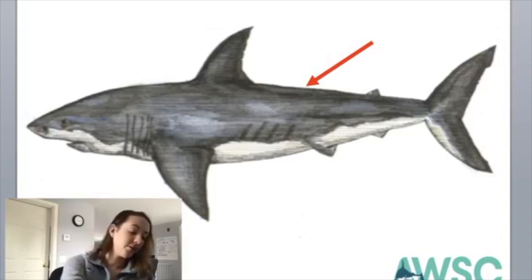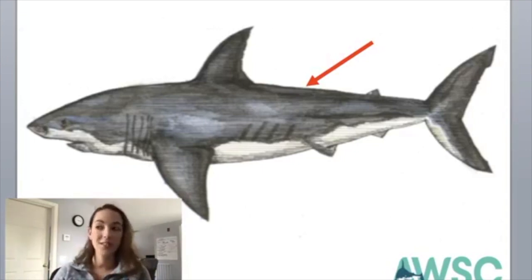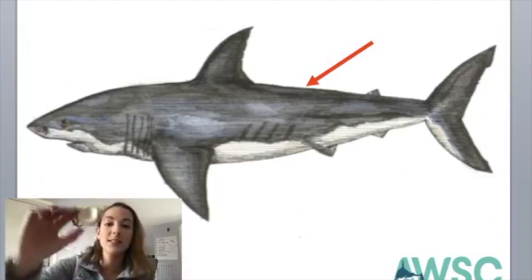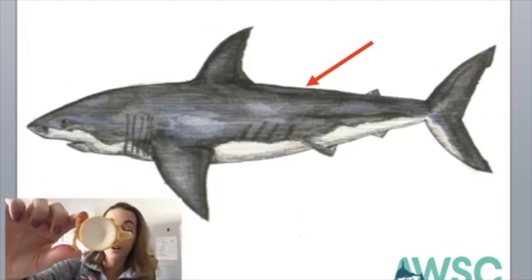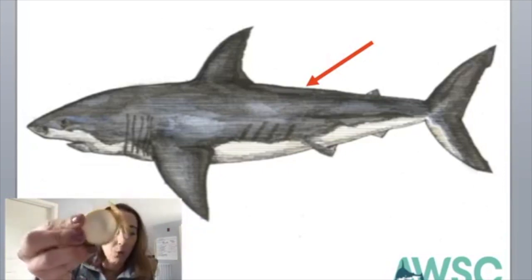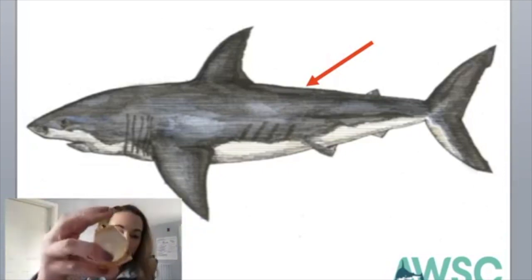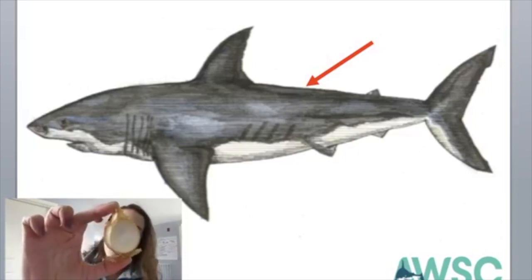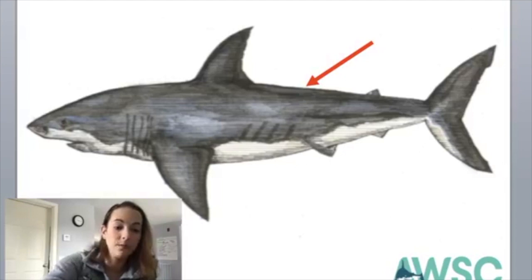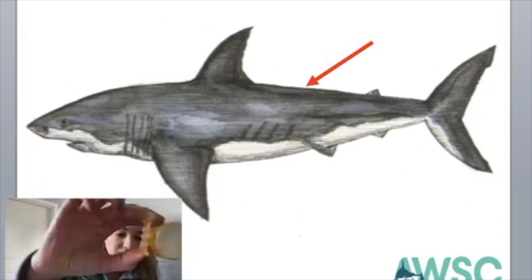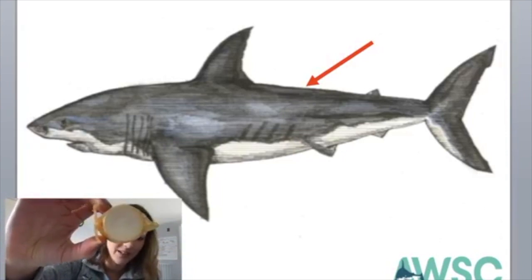I wish I could be in all your homes to show you these in person because they are super cool. Today I am able to show you a piece of a shark skeleton. It almost looks like bone because of that white color, but this is a piece of a vertebra from a porbeagle shark — and you can see that piece of cartilage on this animal.